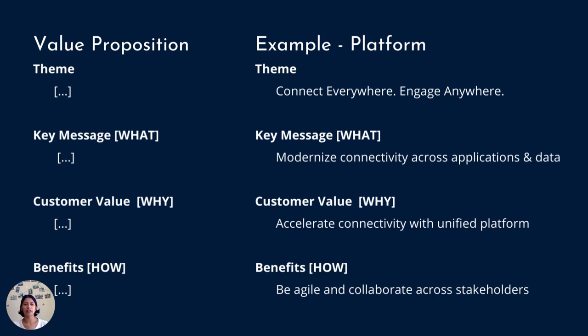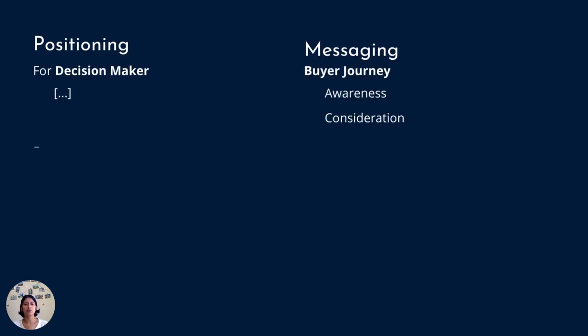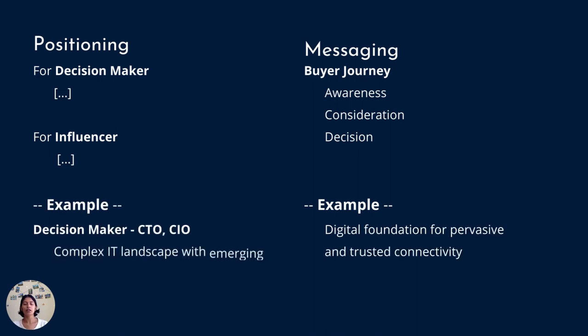Now that we have defined our value proposition, let's look at positioning and messaging. When you are thinking about positioning, there are two factors: who is the positioning for — the decision maker, the influencer, or both? You may end up having two positioning statements. For the decision maker — our CTO, our CIO — the positioning is about a complex IT landscape with emerging technologies and applications, building the bridge between legacy and new applications that exist today.